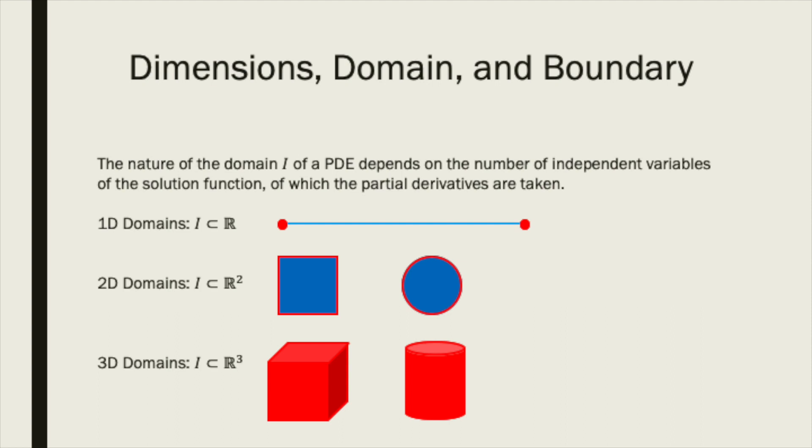Before specifying the types of boundary conditions we will see when exploring PDEs, it is useful to review the possibilities for domains and their specific boundaries. For differential equations with one independent variable, or ODEs, the domain of the solution is a subset of the real number line, shown in blue. If the domain is bounded on both sides, its boundaries are specified by two points, shown in red. Therefore, boundary conditions for ODEs are specified at single points.